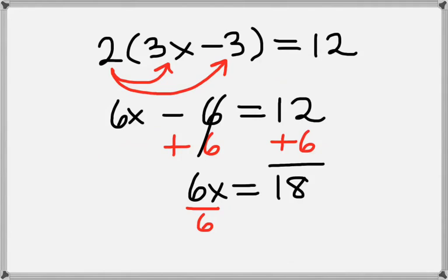Now we want to get x by itself, so we'll divide by 6 on both sides, and that leaves us with x equals 18 divided by 6, which is 3.